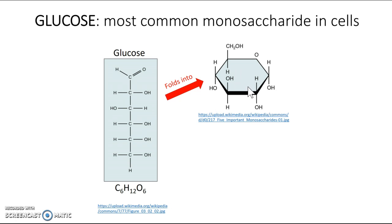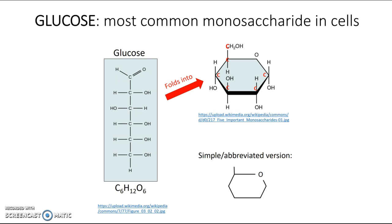If you look at the ring structure, you might wonder where all the carbons are — they're just not drawn in. Every corner of the molecule is a carbon: 1, 2, 3, 4, 5, and the 6th carbon is up top, while this corner is actually an oxygen. Instead of memorizing the full structure, we're going to ask you to memorize this simple abbreviated version: a six-sided shape where oxygen is one corner and the 6th carbon is a little stick sticking up.